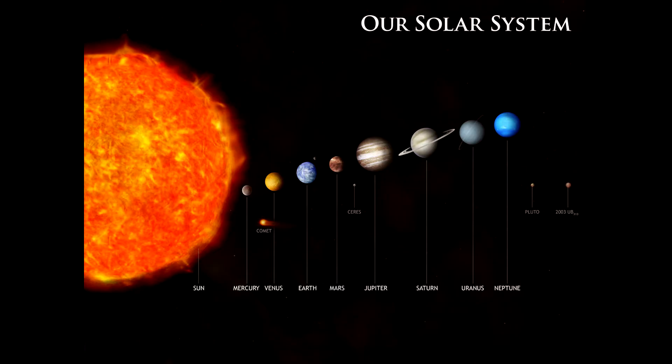Arrangement. Closest planet to sun is Mercury, then comes Venus. Third planet from sun is Earth, then Mars.